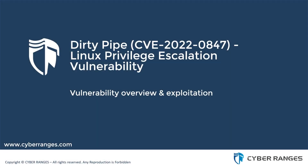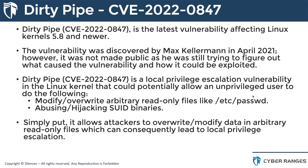Hello everyone, welcome to the Cyber Rangers CVE training series. In this video we're going to be taking a look at the Dirty Pipe Linux privilege escalation vulnerability. The CVE code for this particular vulnerability is CVE-2022-0847. Before we take a look at anything practical, we're going to get an understanding and overview of the vulnerability and how the exploit is performed.